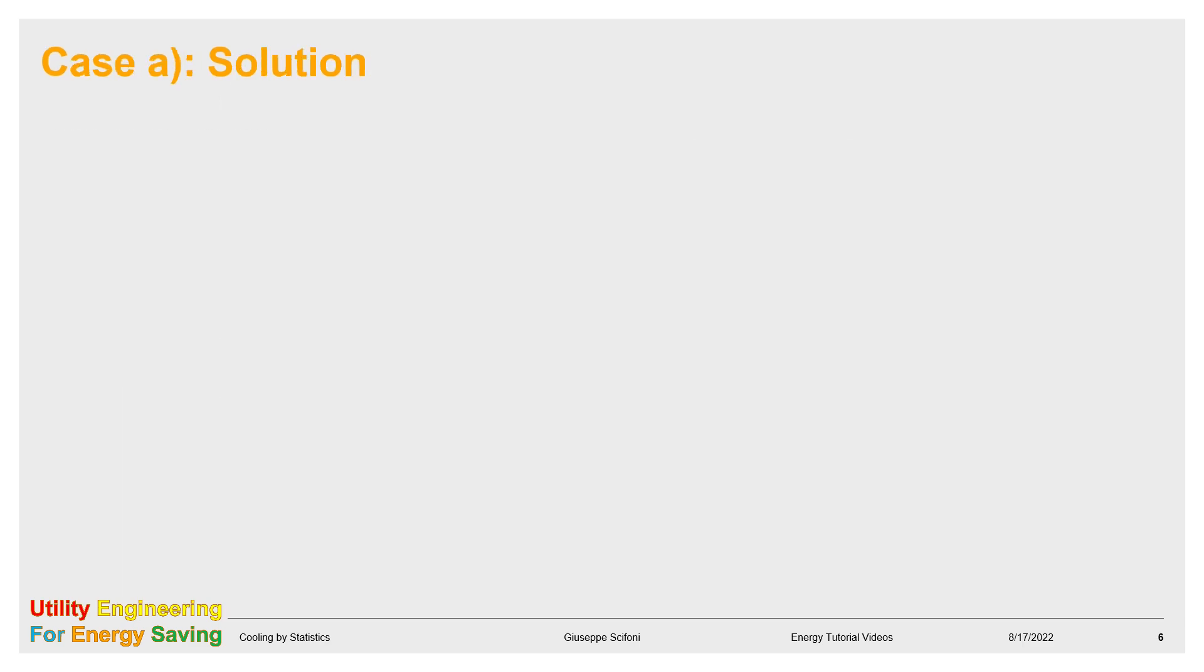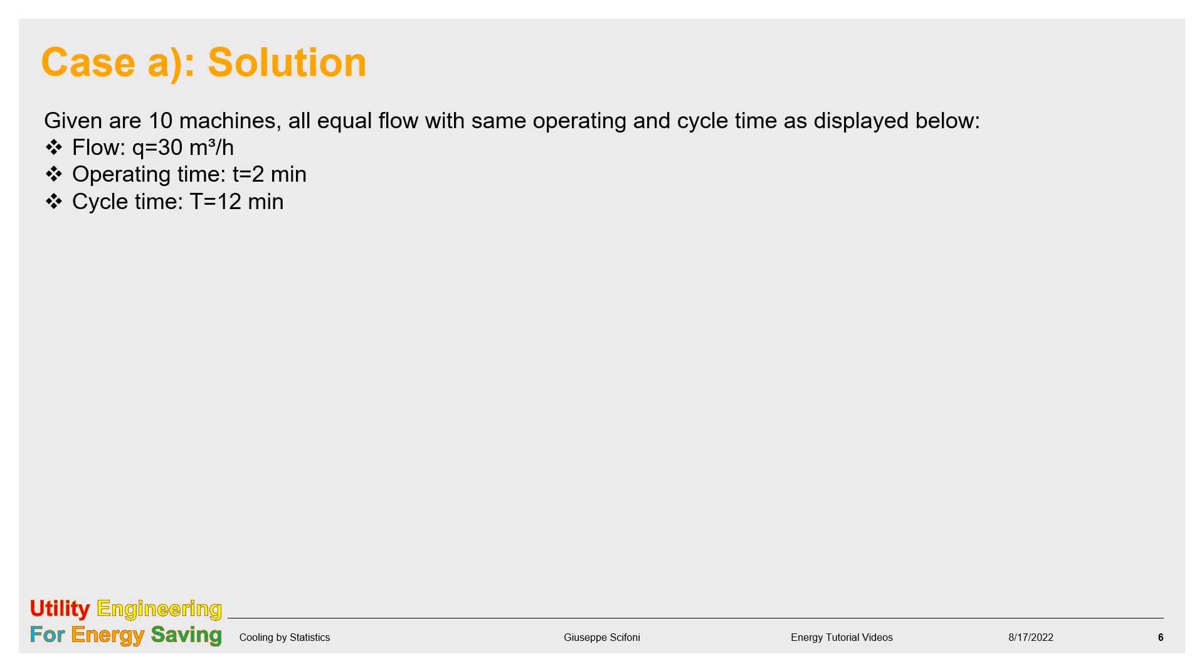In the first case, we assume the ten machines are equal. All have same operating and cycle time as displayed below. We assume that the machines start their cycles randomly and they work continuously. That means one cycle after the other without interruption. Task is to find the flow capital Q of the system assuming a reliability of 98%.